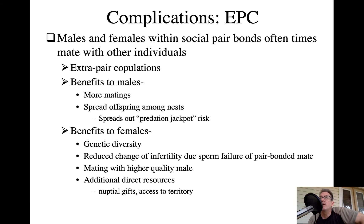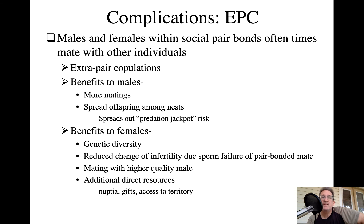From the female's perspective, EPCs are generally about quality, not quantity. One benefit is genetic diversity among young in the nest. If paired with a lower quality male through positive assortative mating, a female can gain better genes by having extra pair copulations with a superior neighbor. Another reason is fertility insurance: even if a male is high quality overall, he may have lower fertility, and mating outside the pair bond maintains clutch fertility.